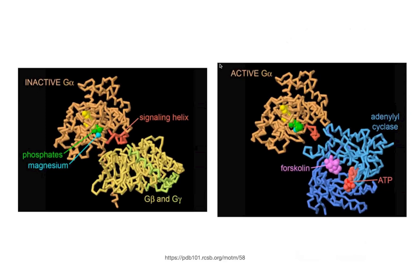Once bound to GTP, it now exposes a binding site for adenylyl cyclase. So what's going to happen? It's going to ditch the beta and gamma subunits, go find the adenylyl cyclase, and activate it.